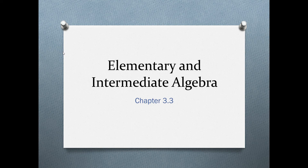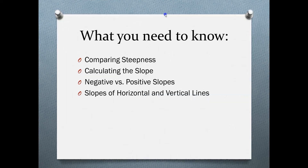Welcome to elementary and intermediate algebra, chapter 3.3. Here's what you need to know in this chapter: how to compare the steepness of various objects, how to calculate the slope, what the difference between a negative slope and a positive slope is, and what the slopes are of horizontal and vertical lines.